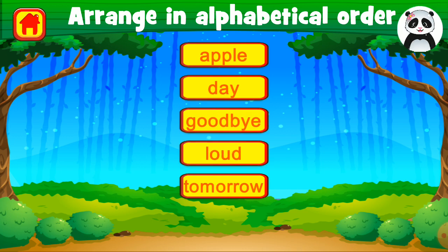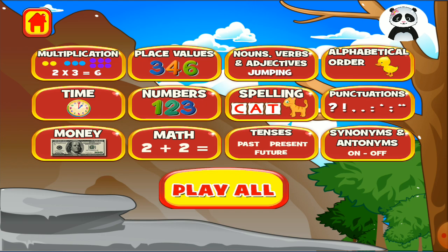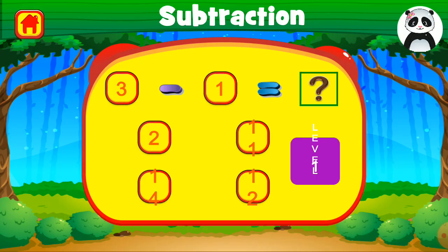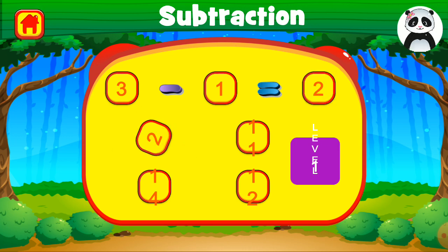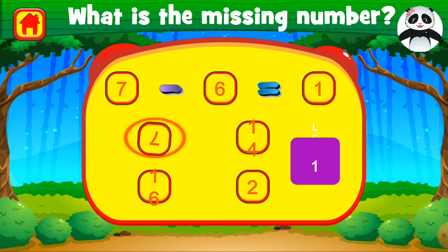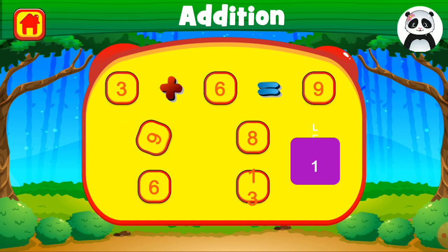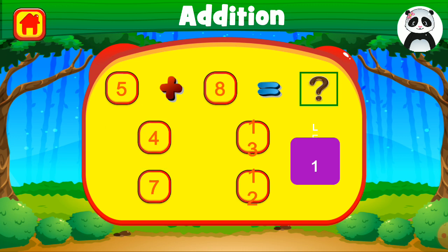Now we are going to calculate addition. Mathematics — so addition, subtraction. 3 minus 1 is 2. Well done. What is the missing number? Missing number is 7. 7 minus 6 is 1. 3 plus 6 equals 9. Awesome. Thank you. 5 plus 8 equals 13. Brilliant.